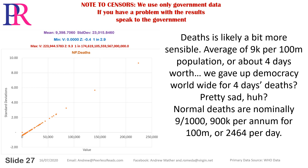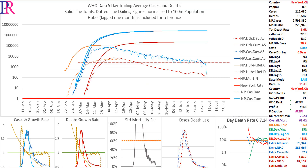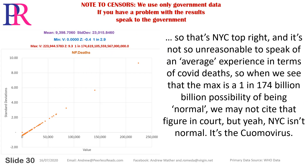Normal deaths are about 9 per thousand, 900,000 per annum per 100 million, or 2,464 per day. So here's New York City — 223,000 deaths. That's New York City top-right, and it's not unreasonable to speak of an average experience in terms of COVID deaths.